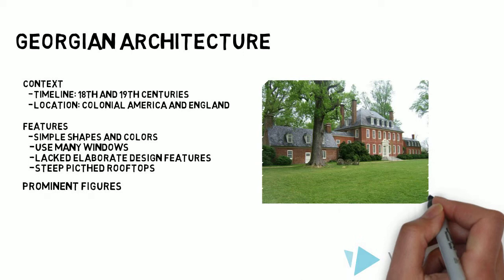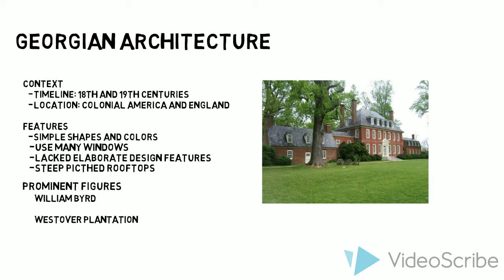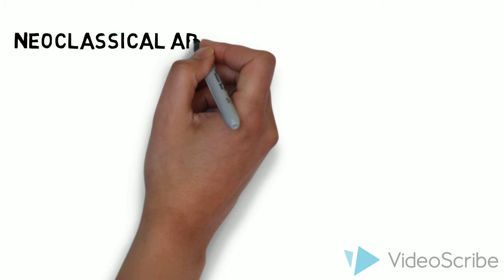This is Westover Plantation, a tobacco farm designed by William Byrne in Virginia. It is visually similar to Massachusetts Hall in terms of the use of windows and its symmetry. Again, we see the use of angled rooftops.